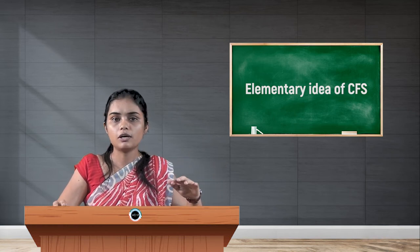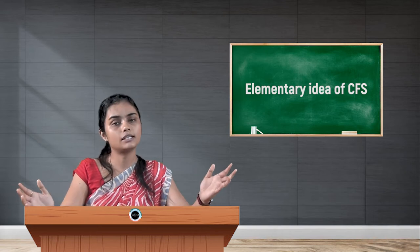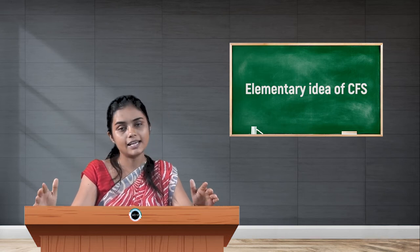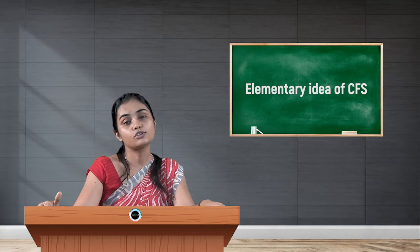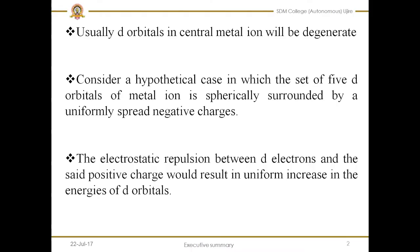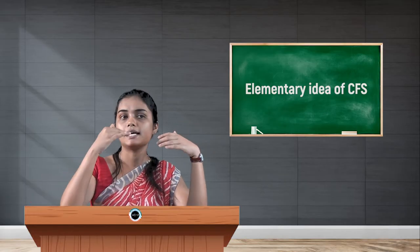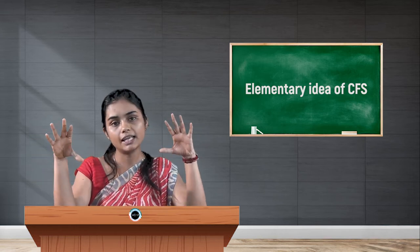The D subshell has 5 important D orbitals: dxy, dyz, dxz, dx²-y², and dz². Usually in any subshell, the orbitals maintain degeneracy. Degeneracy means all the orbitals present in the subshell will have equal energy. So even in the D subshell, as 5 D orbitals are present, they will be degenerate in nature.